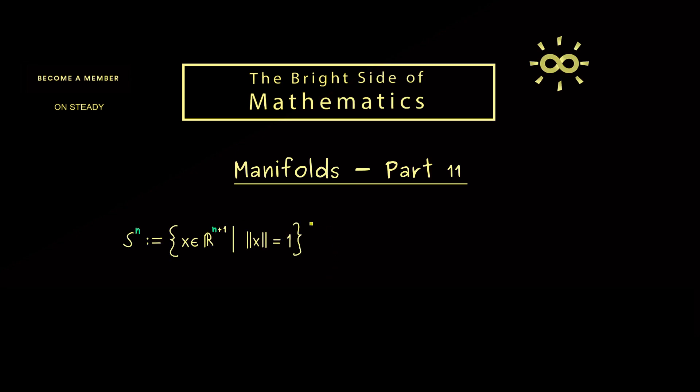For this, please recall in the last video we discussed the n-dimensional sphere, which is given as a set in R^{n+1}. So the typical example would be S^n in the 3-dimensional space R^3. However, also in the general case, we can show that S^n is an n-dimensional manifold.